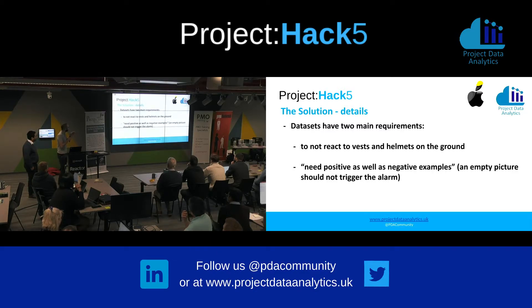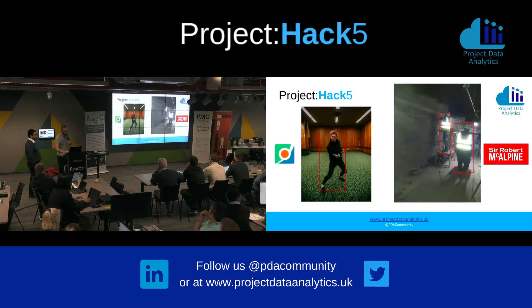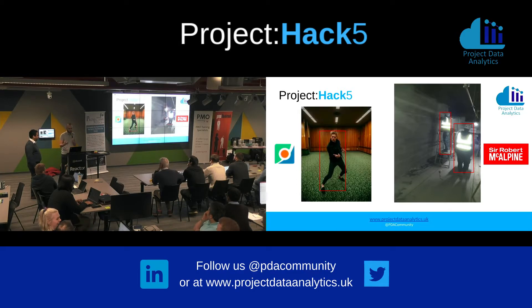The requirements are the following: in order to not classify something that is just lying on the ground, we always have to connect the safety equipment to a person. We also need positive and negative examples — so if there is an empty image it should not trigger the alarm. What we did is implement a neural network that scrapes the COCO dataset to find persons, and we also scraped the McAlpine dataset to find persons wearing safety equipment, combining our own training dataset to train for whether people are wearing a vest or not.